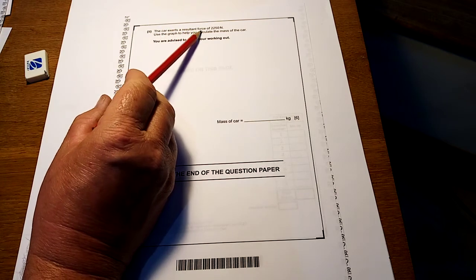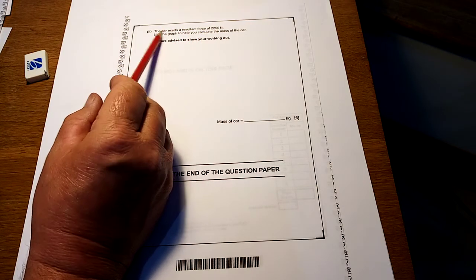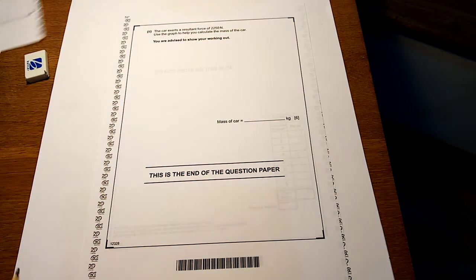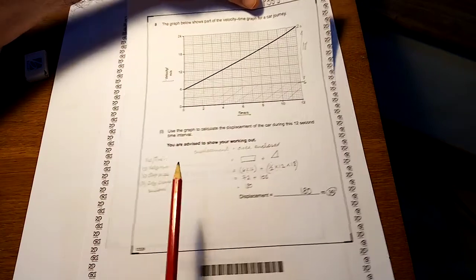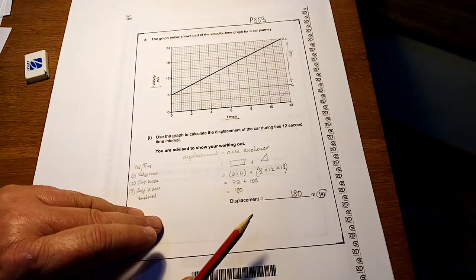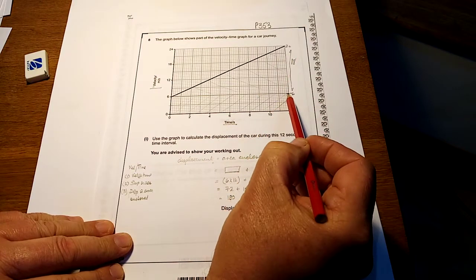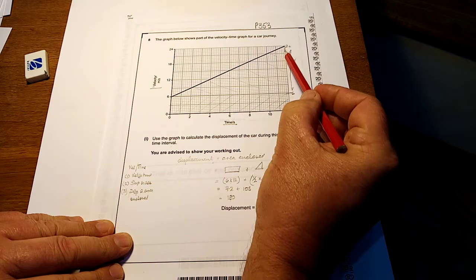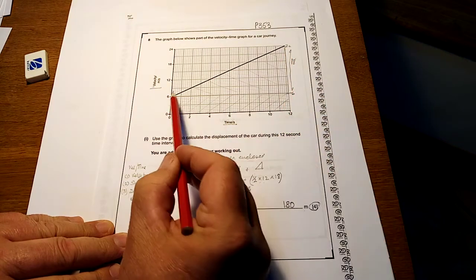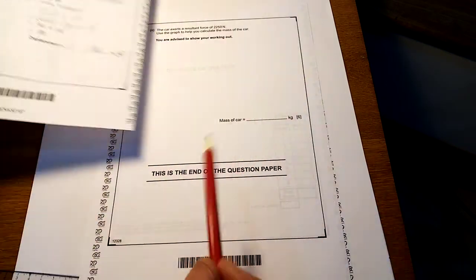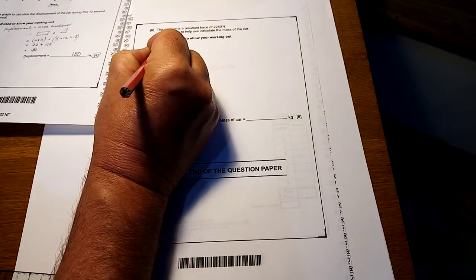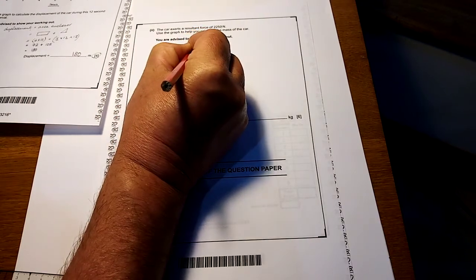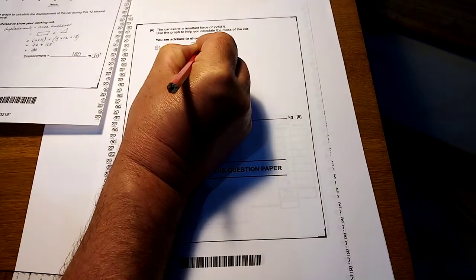Now. The car exerts a resulting force of 2250 newtons. Use the graph to help you calculate the mass of the car. Now. Just go back to this one for a minute. Look. The slope is the acceleration. Rise over run. Now be careful. Look. You see there's the rise there. And there's the run. So. Let's write down. Slope equals acceleration equals a rise over a run.